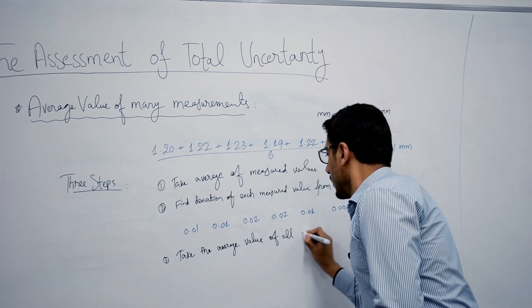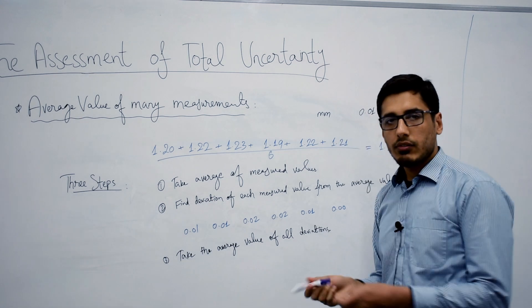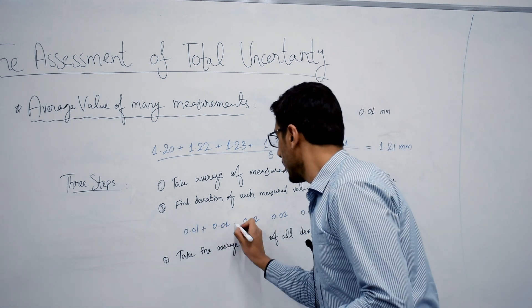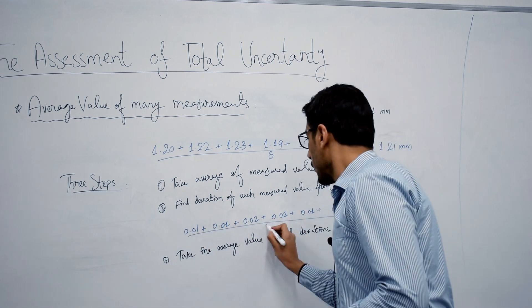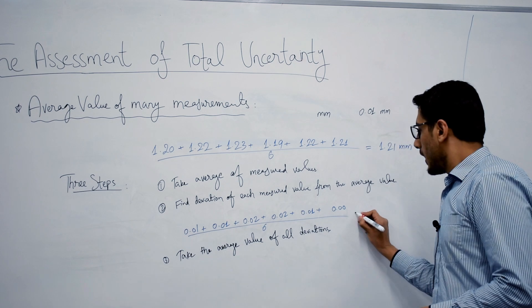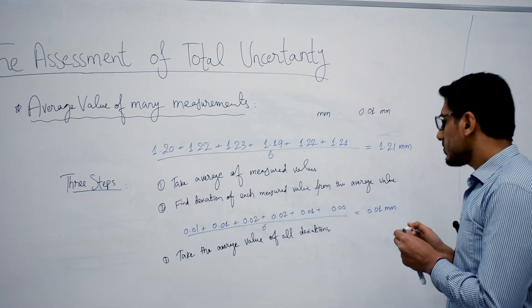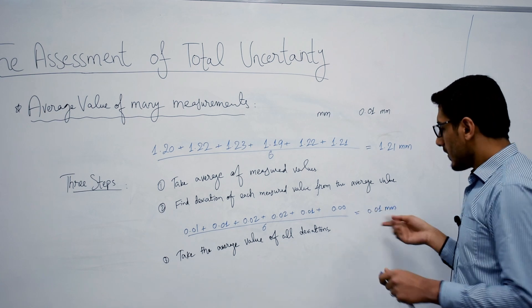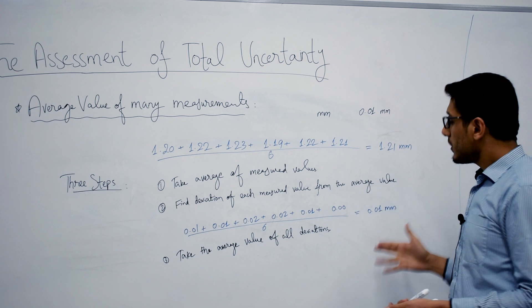How can we do that? Simply add them and since we have six of them, divide by six. And the result that we are going to get is 0.01 mm.